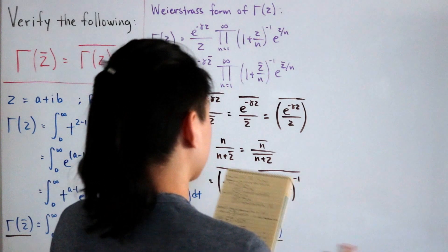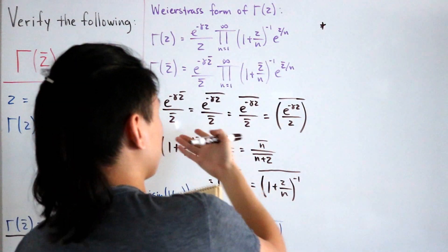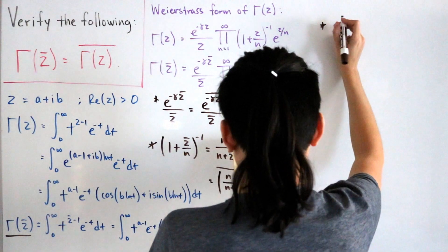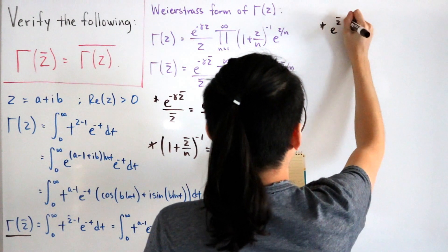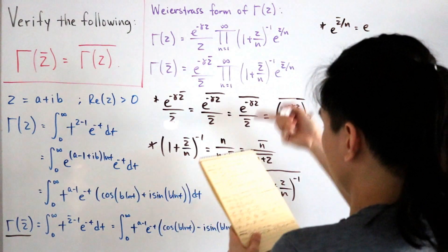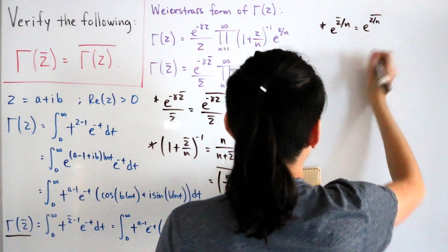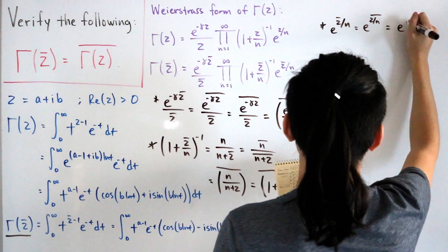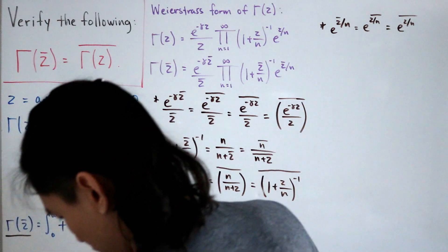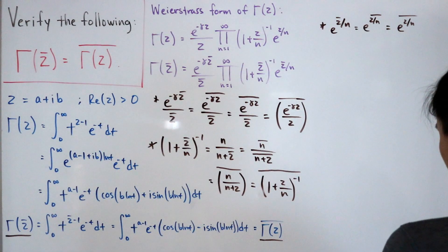For the third piece, e to the power z-conjugate over n: using the same property as before, the exponent conjugate gives us that this equals the conjugate of e to the power z over n. So now we have all three pieces verified, and we can plug them back into the original Weierstrass form equation.